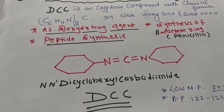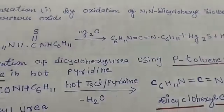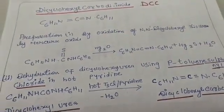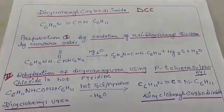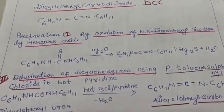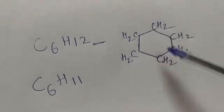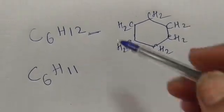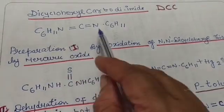The structure of DCC has two cyclohexyl rings with the carbodiimide formula. Now let us see how we can prepare DCC. We know that cyclohexyl is C6H11 because there is CH2 everywhere in the ring — compare to benzene C6H6, and removing one hydrogen gives C6H11.